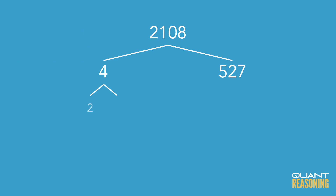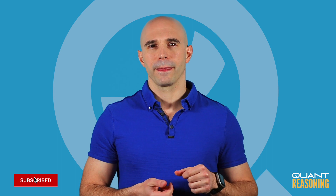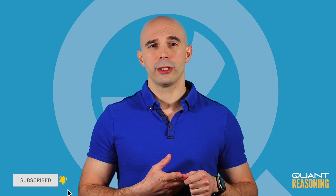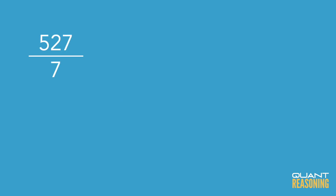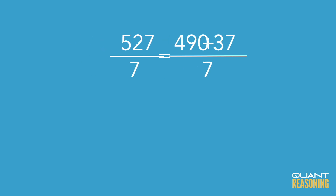I'll think of it as 2,000 over 4, plus 100 over 4, plus 8 over 4 — that's 500 plus 25 plus 2, which is 527. So 4 and 527 are the first two branches for 2,108. I won't circle 4 because it's not prime — I split it into 2 times 2 and circle each of those. Now I focus on 527. It's not divisible by 2 because it's odd, not by 3 because the digit sum is 14, and not by 5 because it ends in neither 5 nor 0. Is it divisible by 7? I think of 527 as 490 plus 37 — 490 is divisible by 7, but 37 is not, so 527 is not divisible by 7.